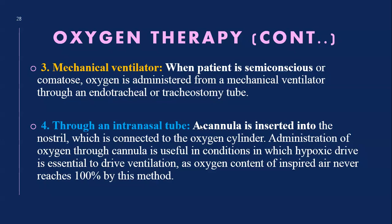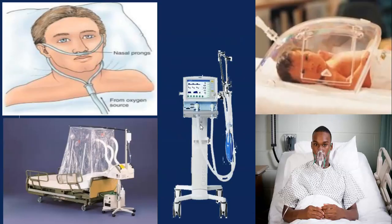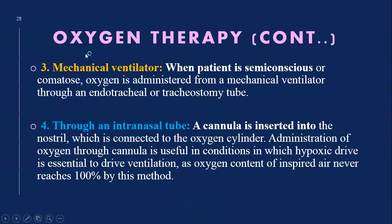The fourth method is through an intranasal tube, where a cannula is inserted into the nostril and connected to the oxygen cylinder. Administration of oxygen through the nasal prongs is useful in conditions where hypoxia needs to be urgently addressed.